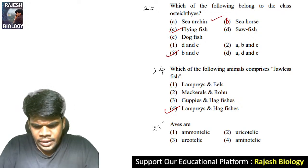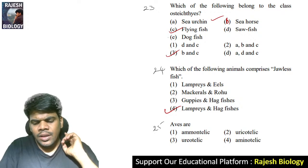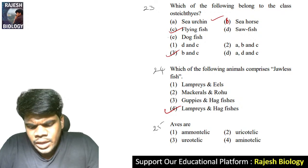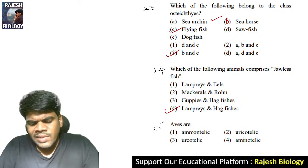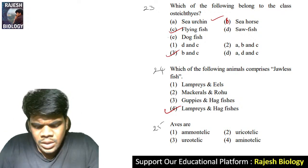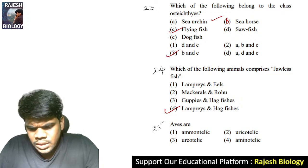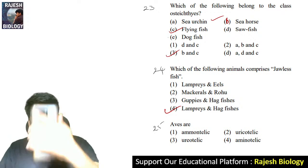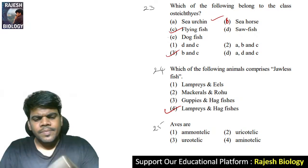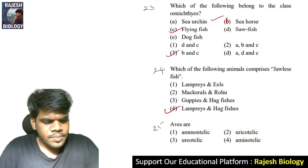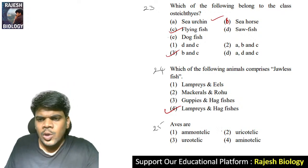If your screen is not clear, click on the settings button on the top right side. Go from auto mode to advanced and select 480 or 720 pixels — maximum is 720 pixels for best quality. Twenty-fifth question: the right answer is Aves — uricotelic animals. Twenty-sixth question: to which class does Pteropus belong? Pteropus is called the flying fox — it is a mammal, a bat.